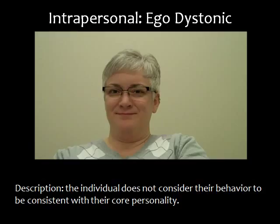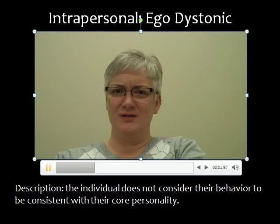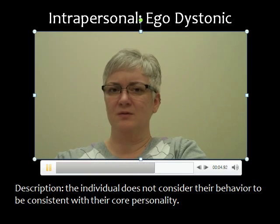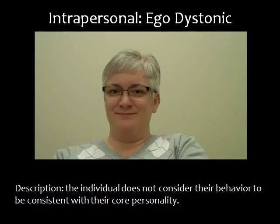Ego dystonic is described as when an individual does not consider their behavior to be consistent with their core personality. In this example, the client is contrite, with a serious facial expression that mirrors their vocal content — that they experience regret for things said to their mother. The client doesn't have to say this isn't me; it's enough for them to express remorse for that behavior. That behavior to them is unacceptable, or ego dystonic.